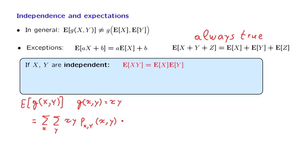Now, using independence, this sum can be changed into the following form. The joint PMF is the product of the marginal PMFs.